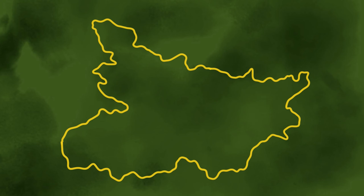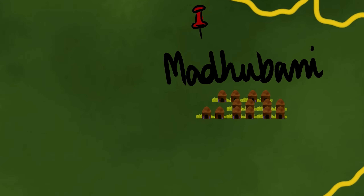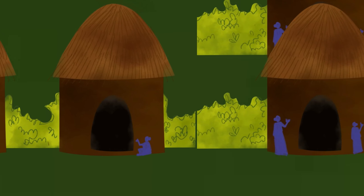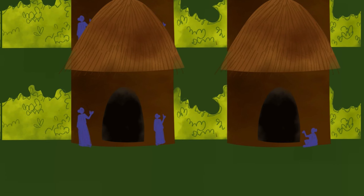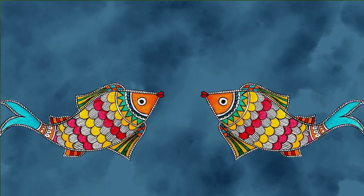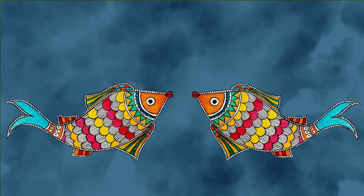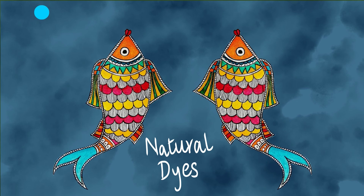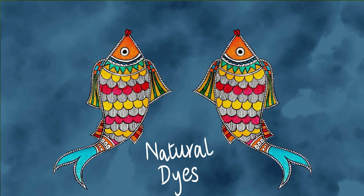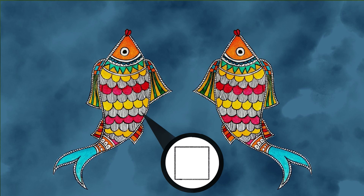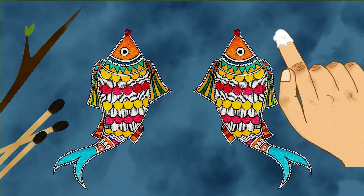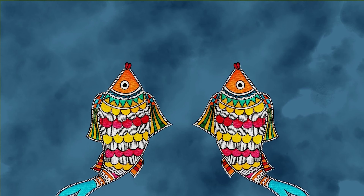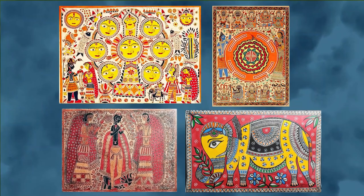The Madhubani style of painting can be traced to the Madhubani district in Bihar — literally meaning 'a forest of honey' — where women spent a lot of time making these paintings on the walls of their homes. These paintings are made on canvas, cloth, or cow dung-washed handmade paper. Natural dyes and colors are used in the creation of Madhubani artworks, with geometrical figures and vibrant colors being key elements. They are painted with the help of twigs, fingers, and matchsticks.